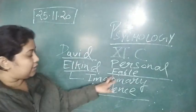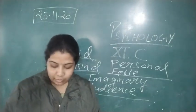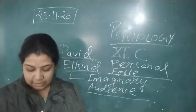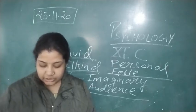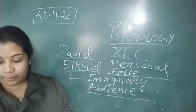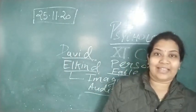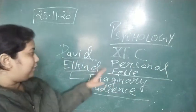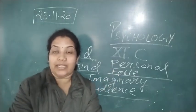The personal fable is the part of adolescent egocentrism that involves the adolescent's sense of uniqueness. This sense of uniqueness makes them think that no one understands them or their feelings. For example, an adolescent girl thinks that no one can sense the hurt she feels because of being betrayed by a friend. It is quite common to hear adolescents say to their parents 'you don't understand me.' This is her personal fable — her personal story — and she thinks that nobody understands her feelings.